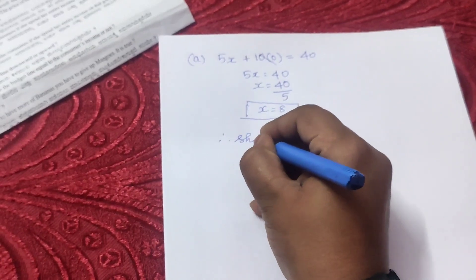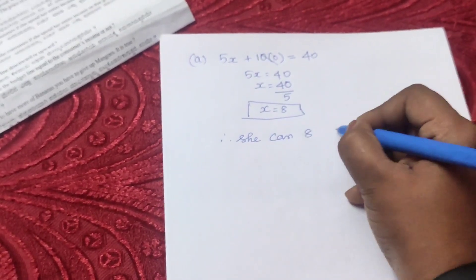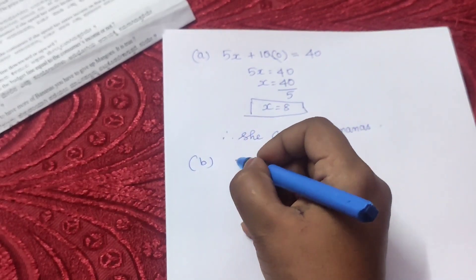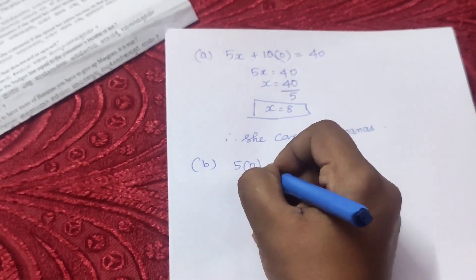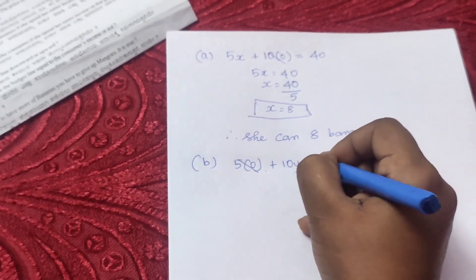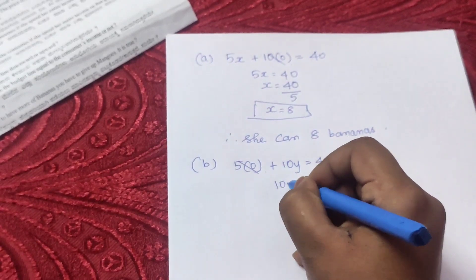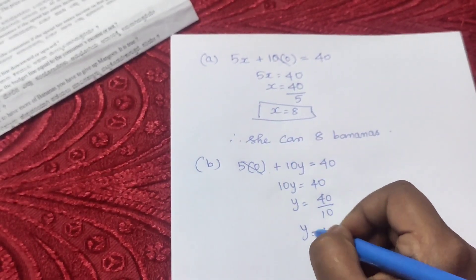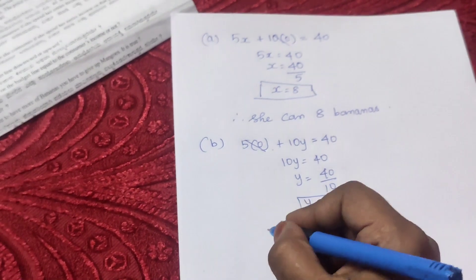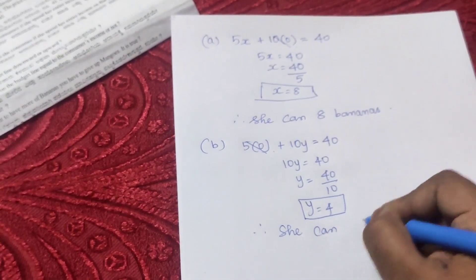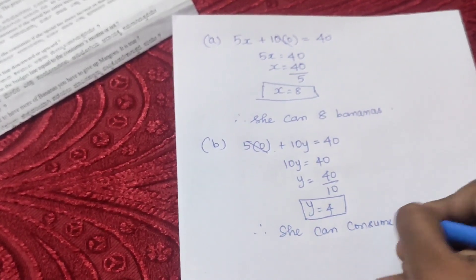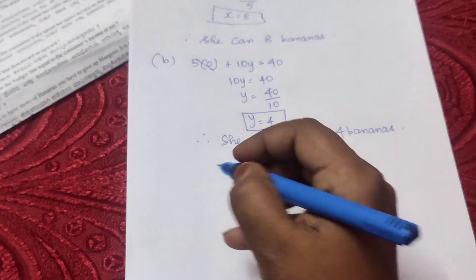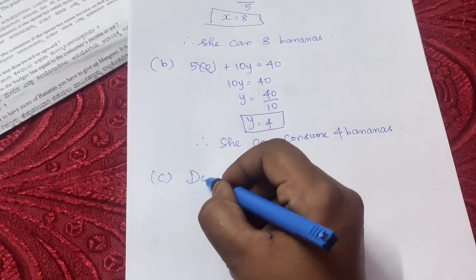She can consume 8 bananas with her entire income. Now we'll find part (b): likewise, 5x = 0 because now we are finding y. So 10y = 40, y = 40 divided by 10, y = 4. She can consume 4 mangoes with her entire income.